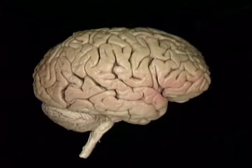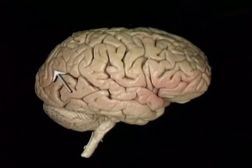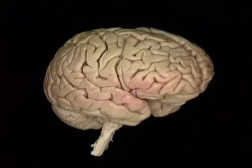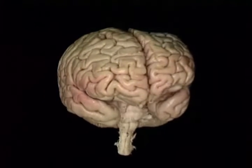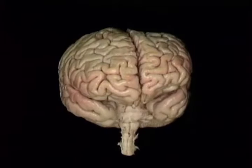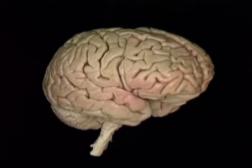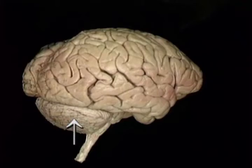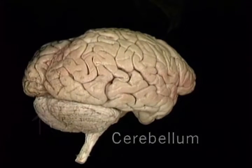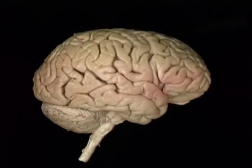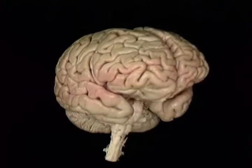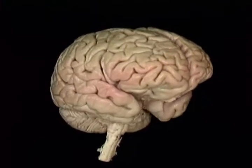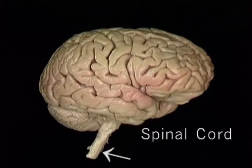Here's the brain. Much the largest part of the brain is the cerebrum, which is partly divided in the midline into two cerebral hemispheres. Below the cerebrum and separate from it is the smaller cerebellum. The cerebrum and the cerebellum both grow out of the brainstem, which becomes continuous below with the spinal cord.